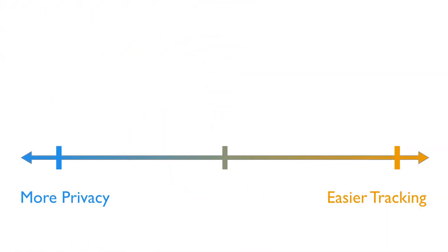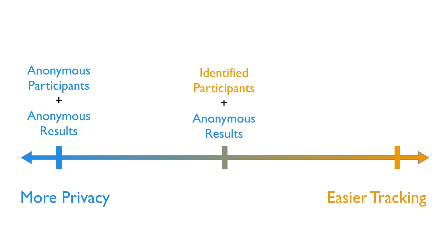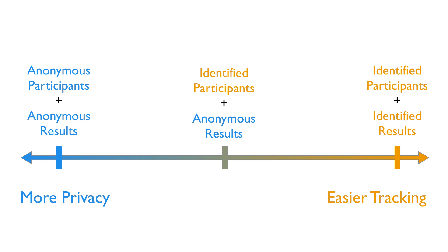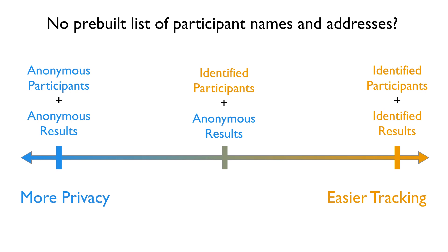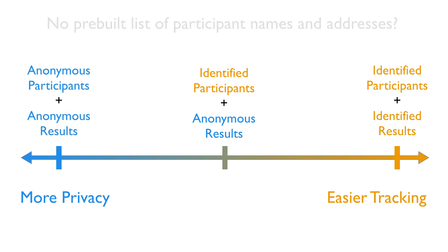These three major options of distributing your survey — whether through completely anonymous email links, identified email links and data, or identified email links with anonymous data — are all possible with Duke's Qualtrics system, and you can pick the best compromise for your own research project. There are a few quick questions you can ask yourself to help pick among them. Do you have a list of names and email addresses that you want to send the survey to? If no, then go with a fully anonymous email link.